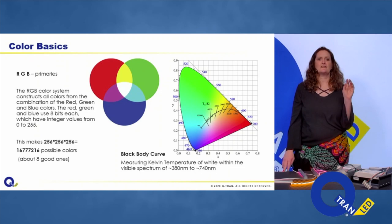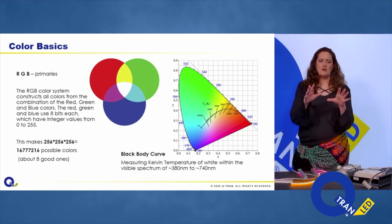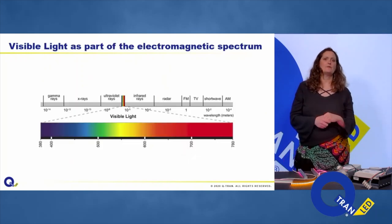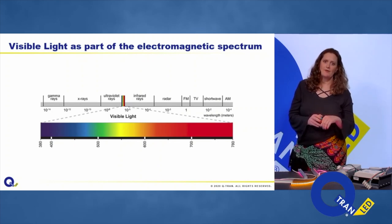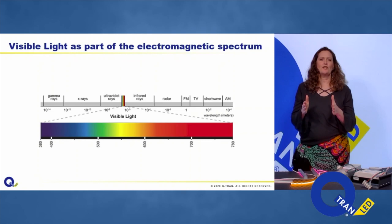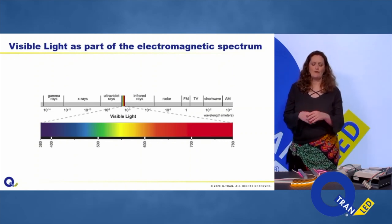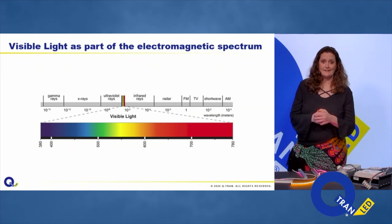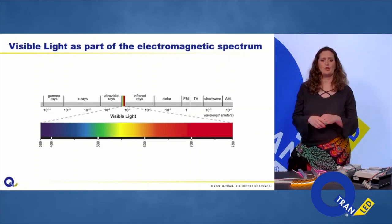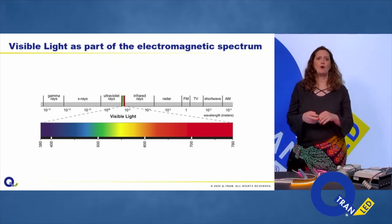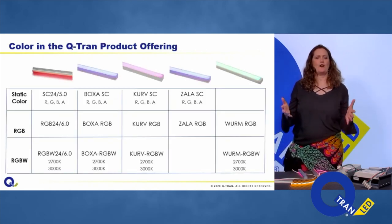Nanometers are the assignment of wavelengths to the colors we see. The math — 256 × 256 × 256 — gives the integer values of R, G, and B. In the visible spectrum, we can see from 380 to 780 nanometers, but LED chips really live in the 450–700 nm range. That's just a quick refresher before we get into what colors we offer in products.